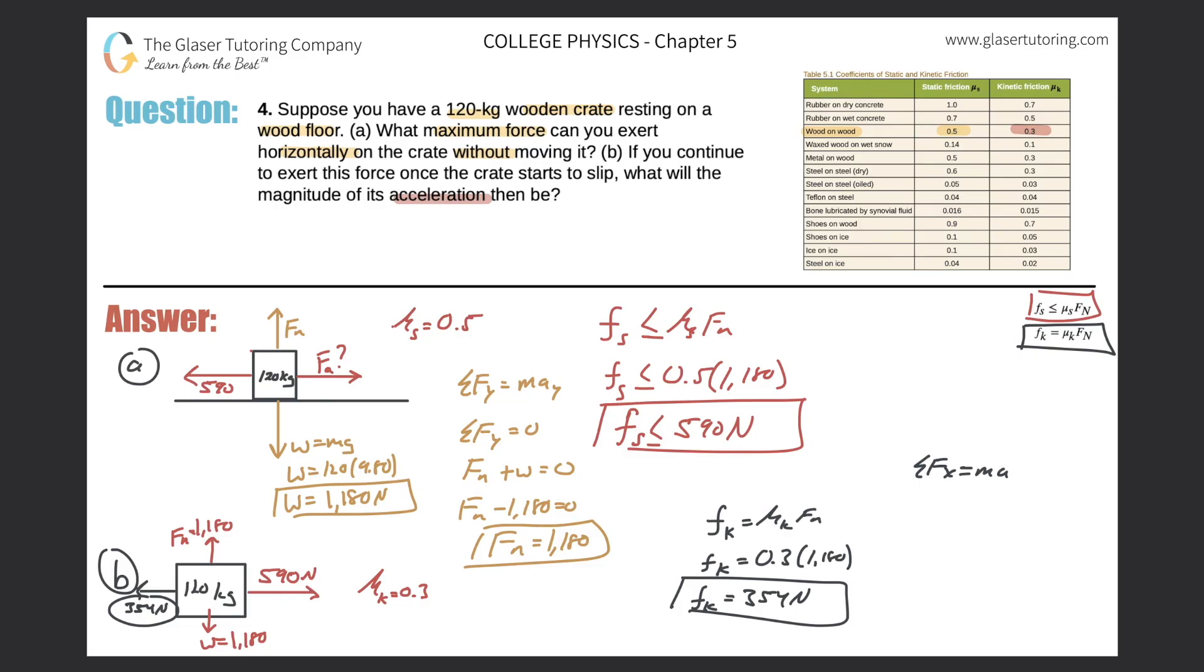So what are the forces in the x direction? We have a positive 590, 590. A negative 354, 354, equals the mass, which is 120 kilograms times A. So simply just divide out the 120 now from both sides, and lo and behold, we'll get our acceleration.